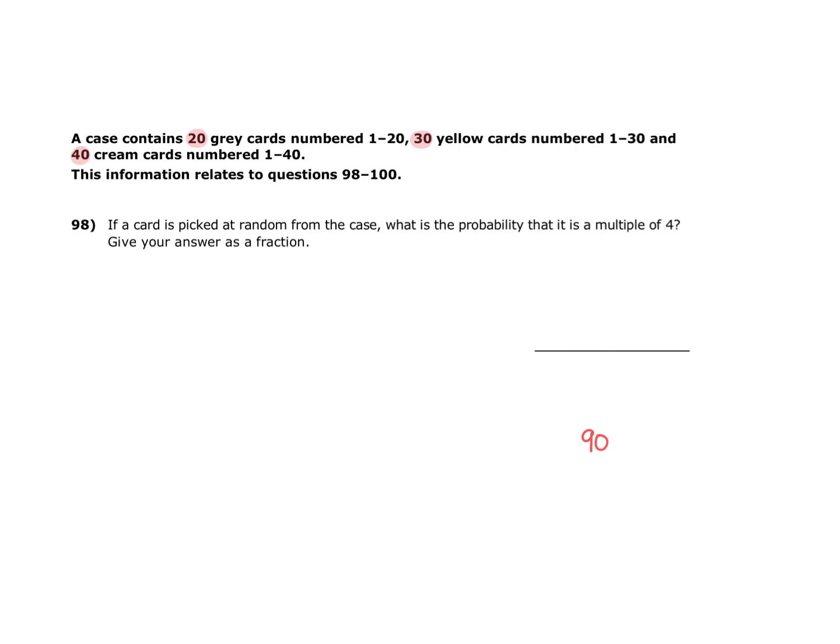Out of the 90 cards, the grey cards are numbered 1 to 20. The multiples of 4 in that set would therefore be 4, 8, 12, 16, and 20. The yellow cards are numbered 1 to 30, so the yellow cards showing a multiple of 4 would